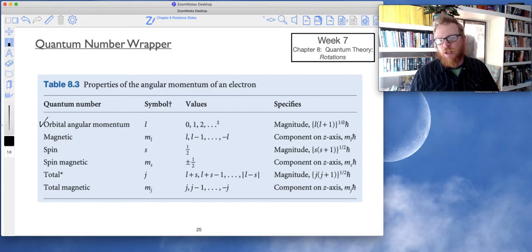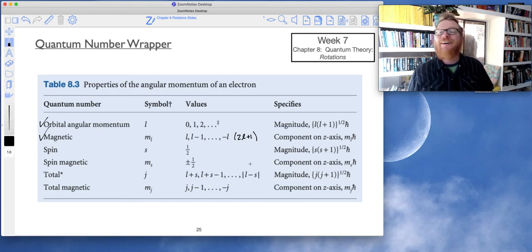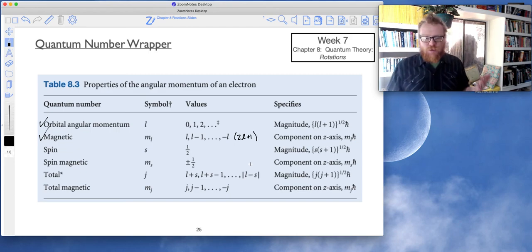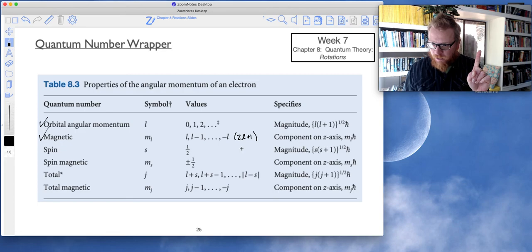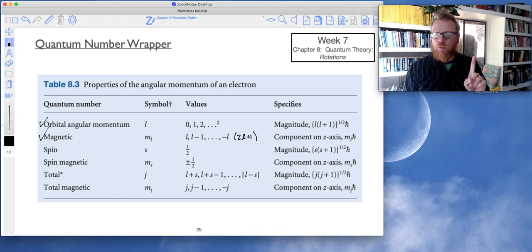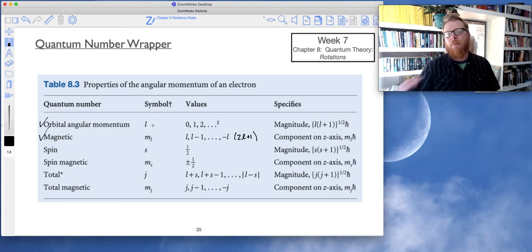We have our magnetic quantum number ml which takes on values l, l minus 1, all the way down to minus l, which means of course there are 2l plus 1 values of ml. If l is equal to zero, two times zero plus one is one, so there's only one ml value for l equals zero. If l is equal to one, then two times one is two plus one is three, so there would be three ml values: negative one, zero, and positive one.